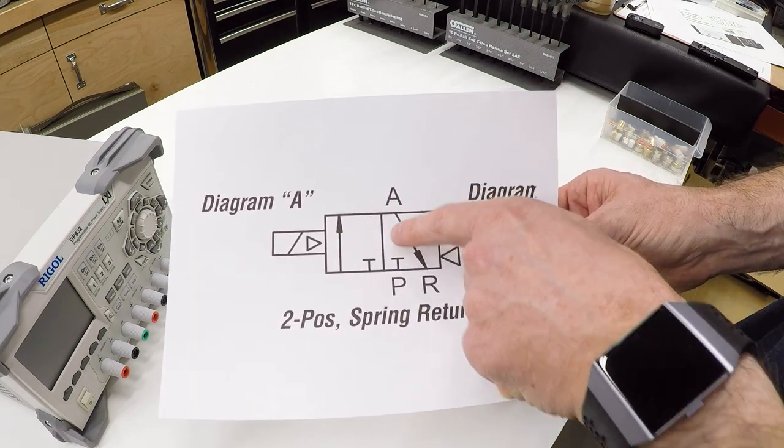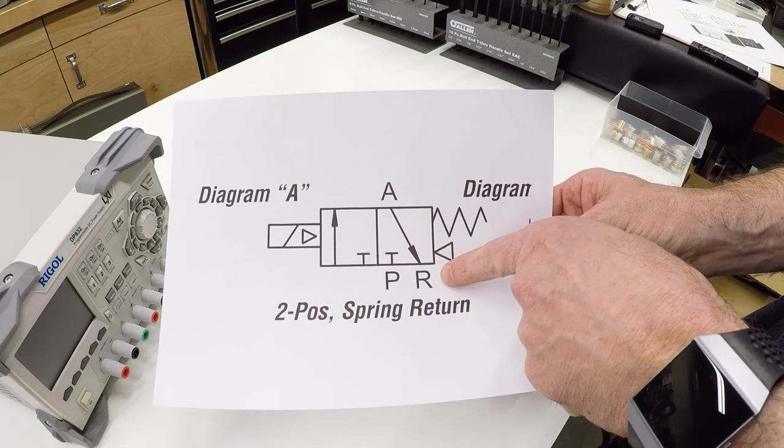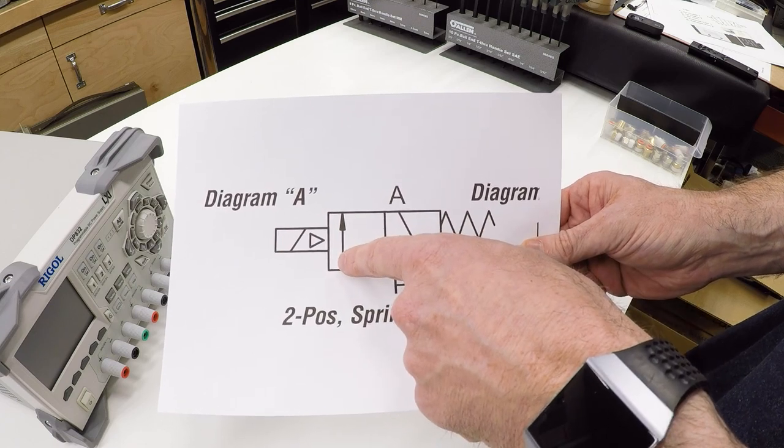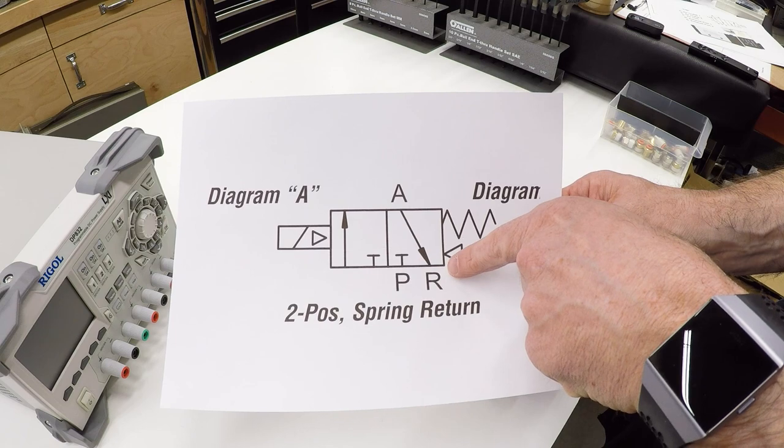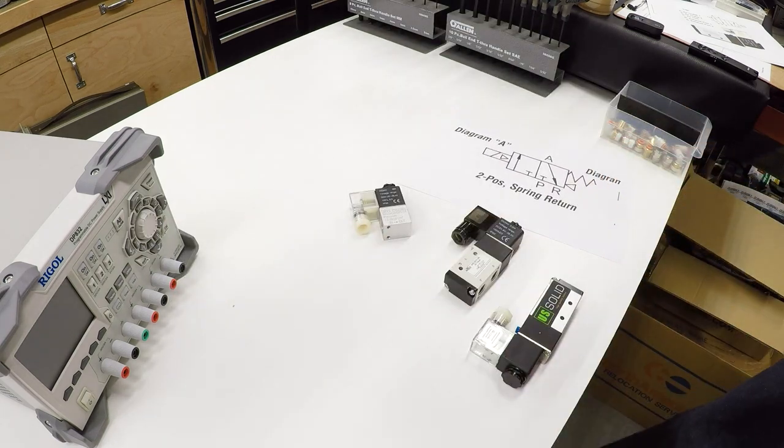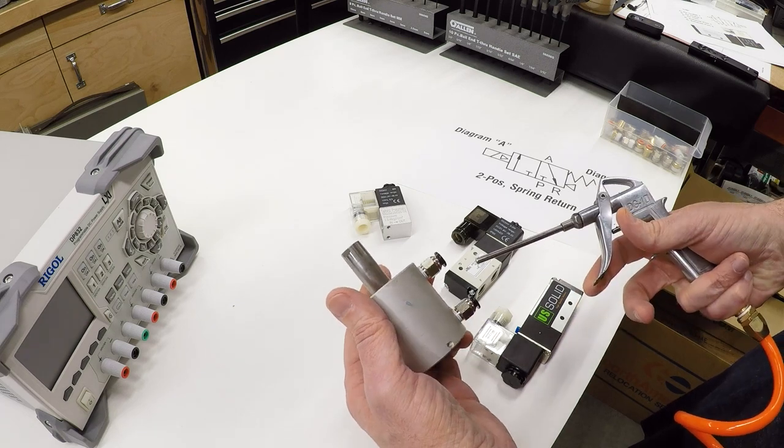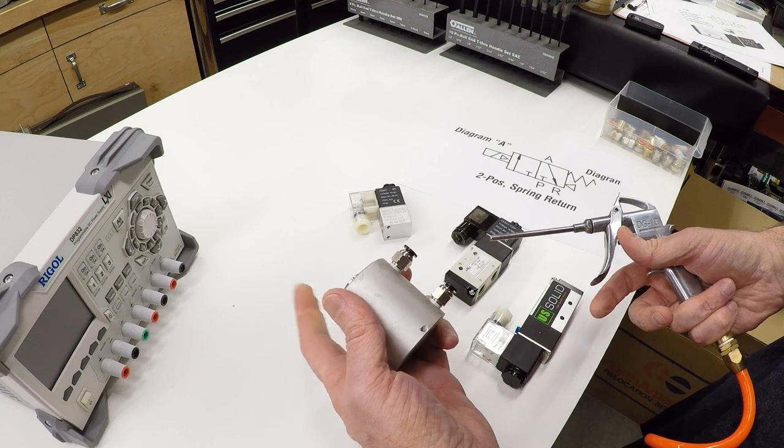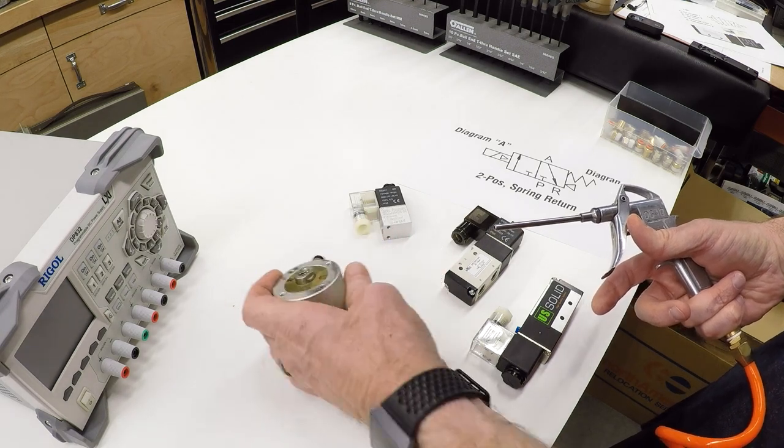When you turn off the magnet, it returns, because of the spring, to this state. The difference is, instead of just blocking the A port, the A port is connected to R, which is the exhaust port. So in this case, you turn it on, it extends the cylinder, you turn it off, and it allows the air to escape from the cylinder out the exhaust so that it can retract. It extends, and then when you release the pressure, it opens this port back up, connects it to the exhaust, and the cylinder can be pushed back by a spring.